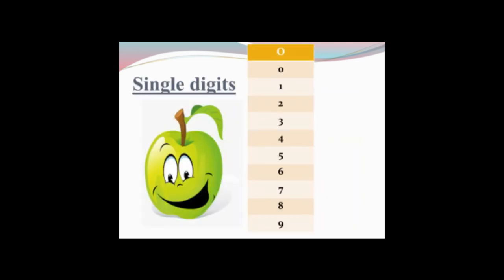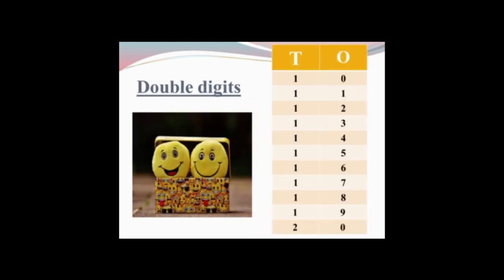From 0 to 9 we have single digits and these digits are written under the ones column. What comes after 9? After 9 comes 10, and 10 is a double digit number. You can see: 1, 0 — that's 10. Here are 2 digits and 1 0 means this is number 10. You can see 0 comes under ones and 1 comes under tens.